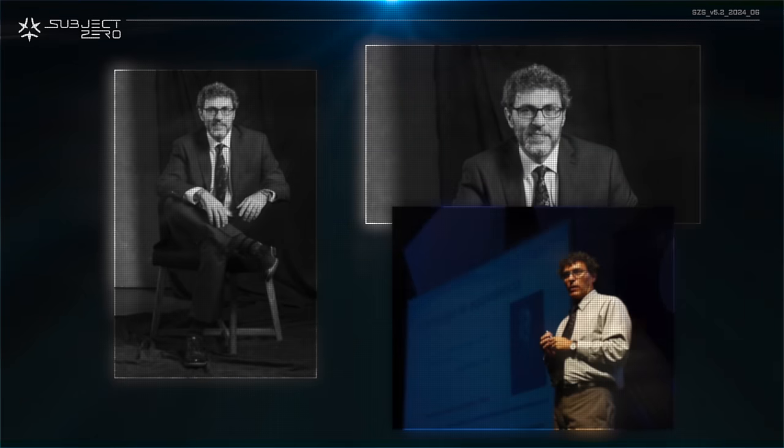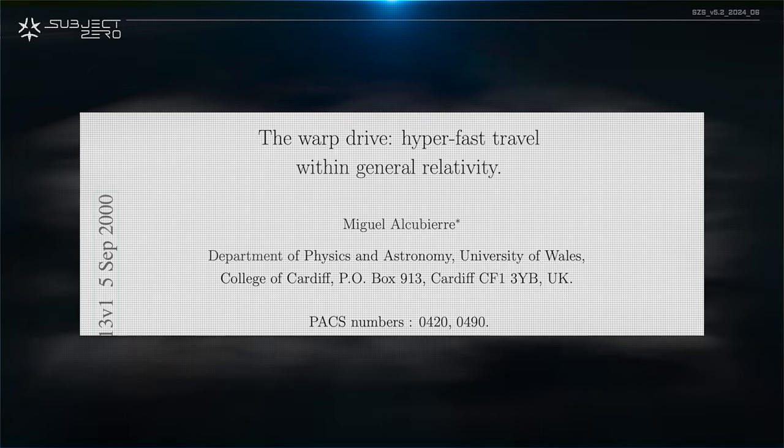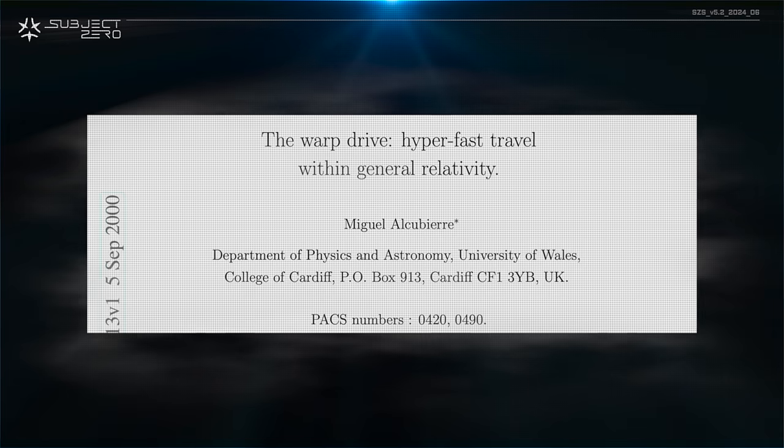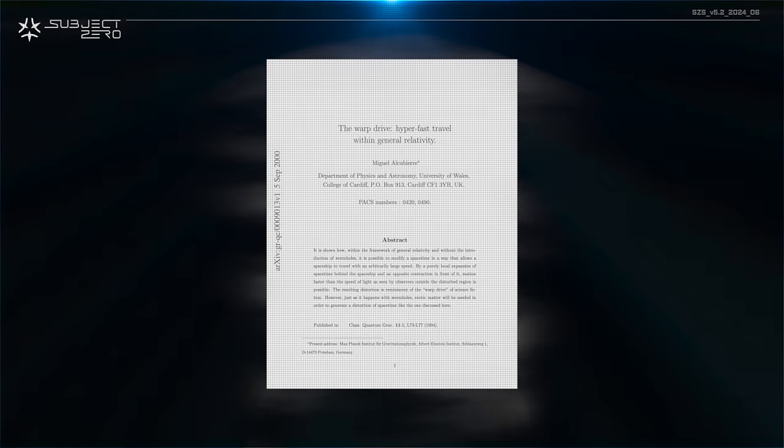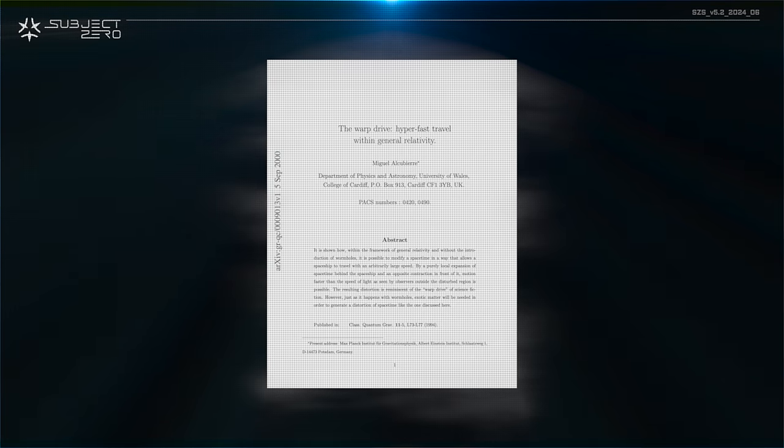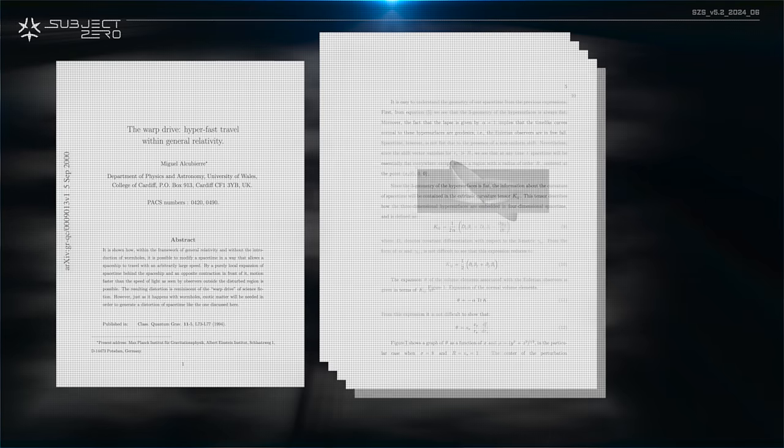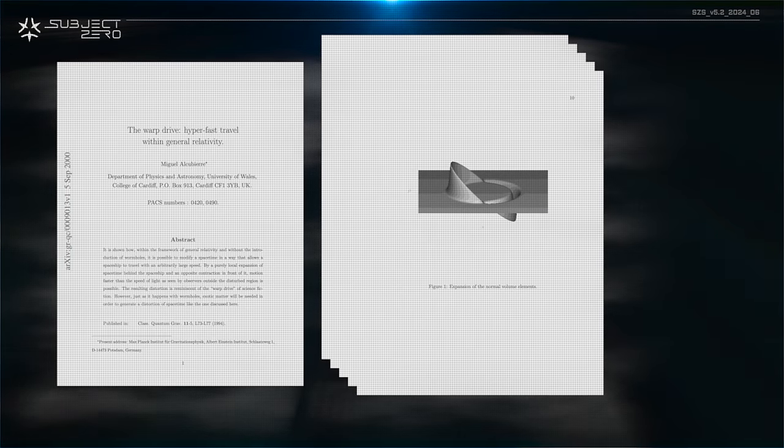1994. Physicist Miguel Alcubierre published a paper titled The Warp Drive, Hyperfast Travel Within General Relativity, in the journal Classical and Quantum Gravity. Alcubierre's paper operates within the framework of Einstein's General Theory of Relativity, which describes gravity as the curvature of spacetime caused by matter and energy.